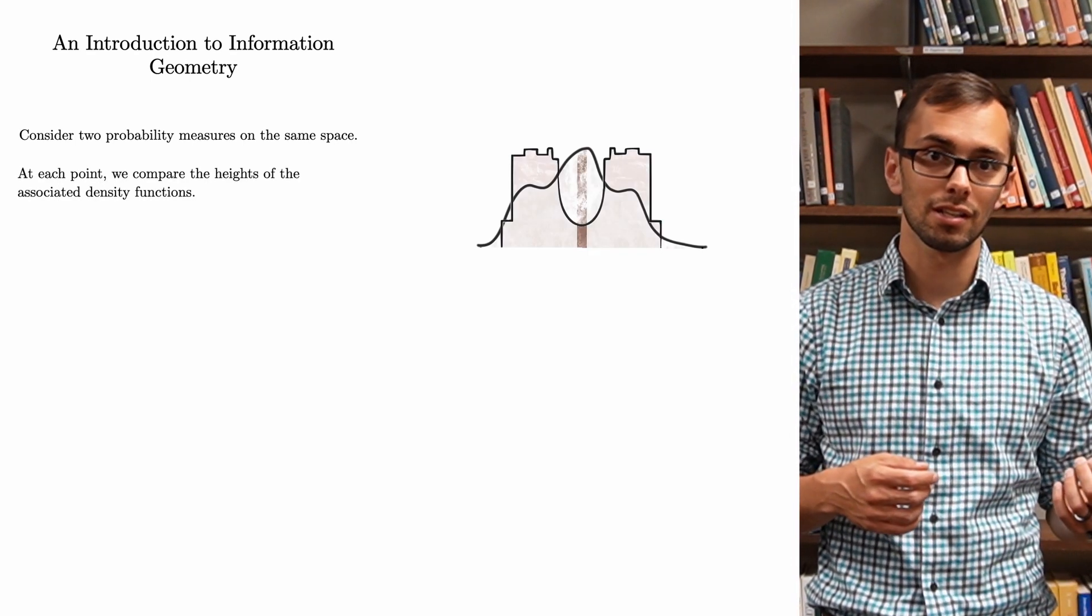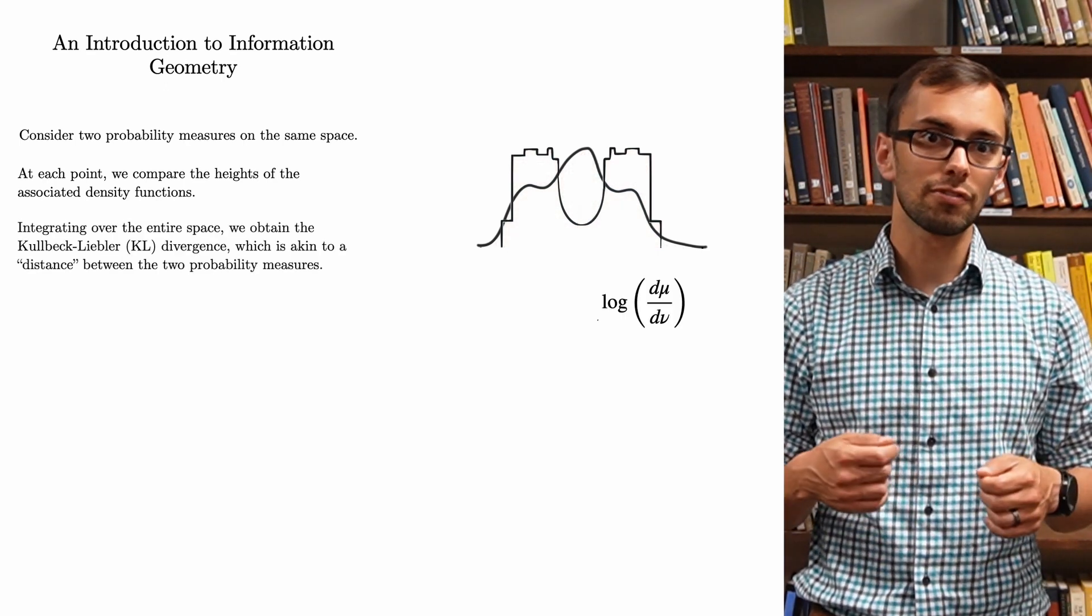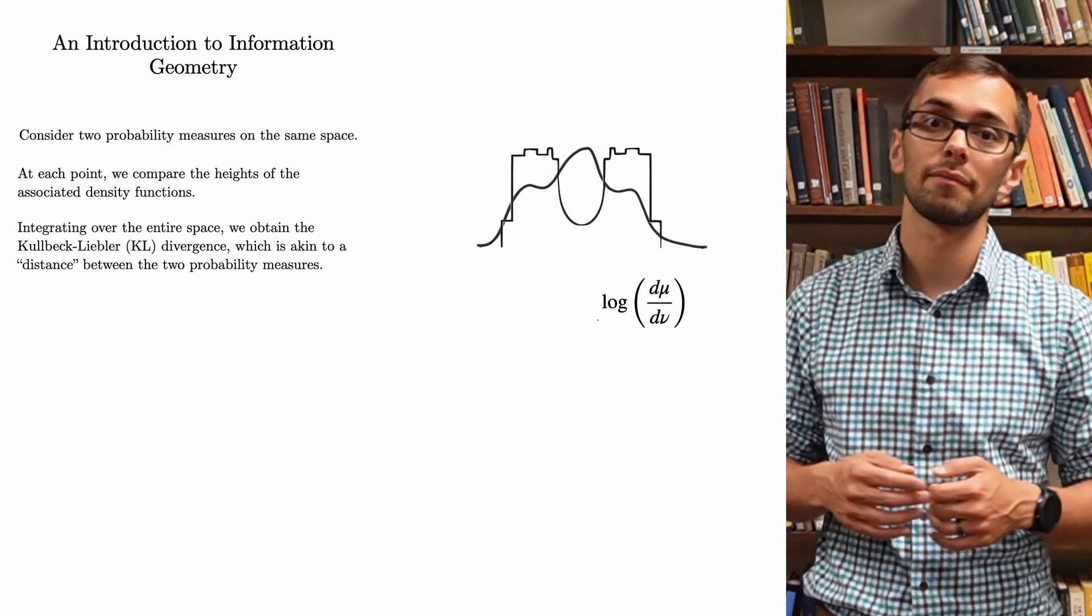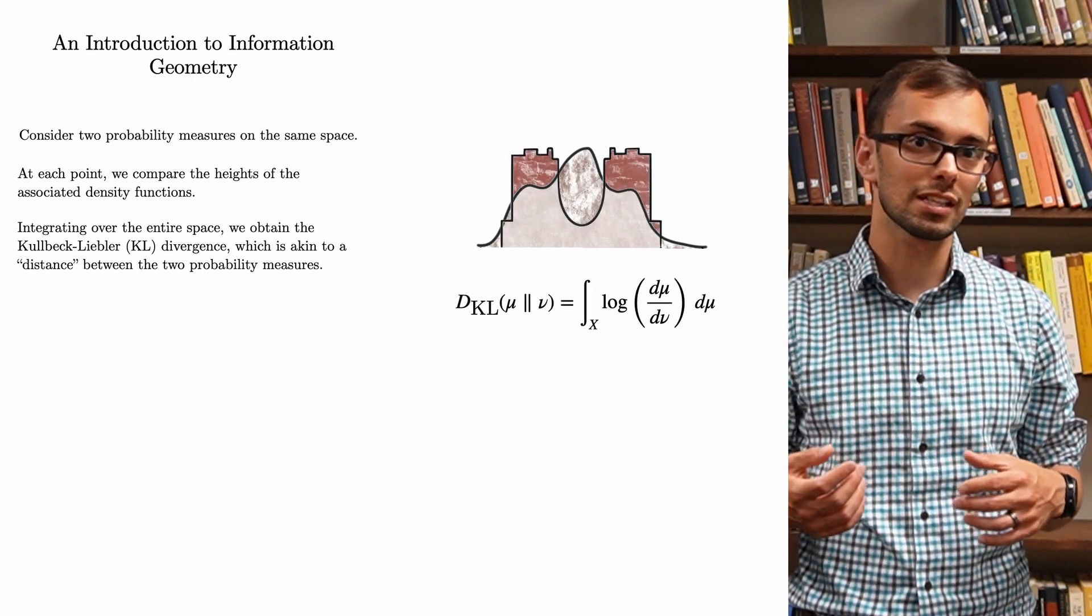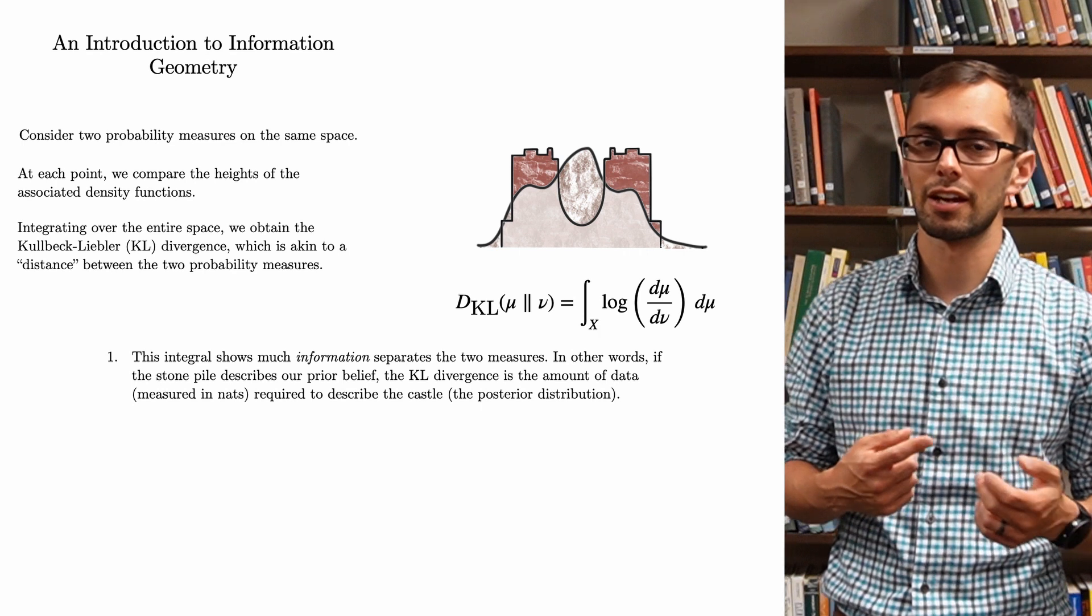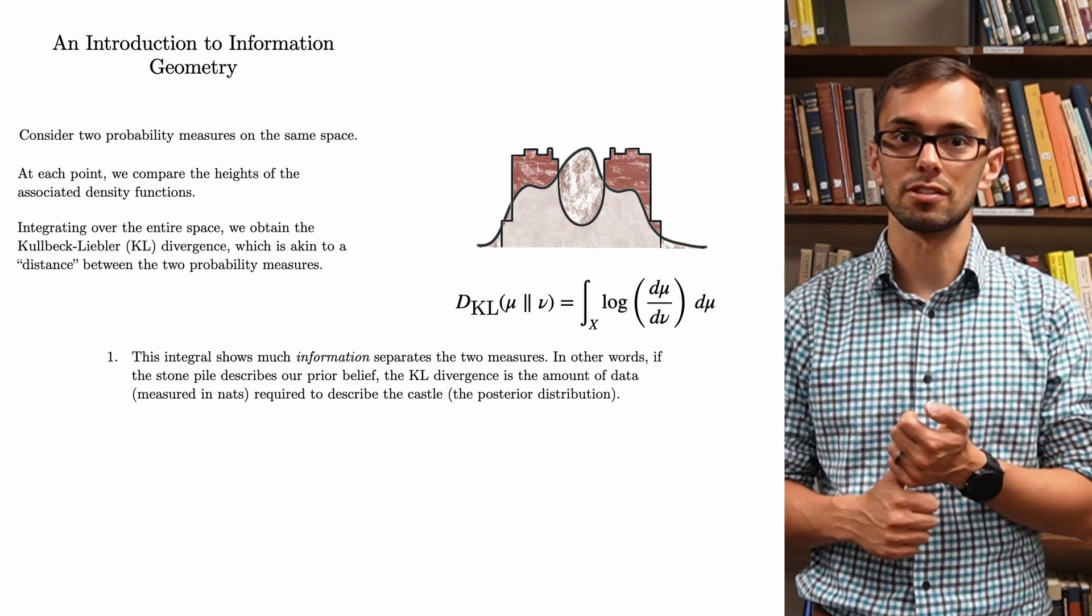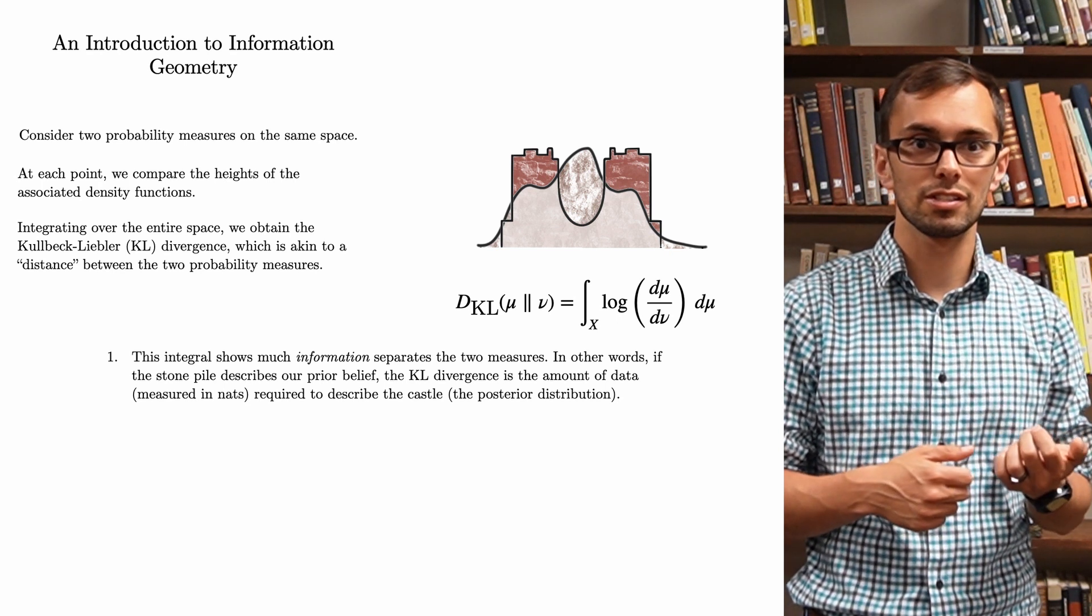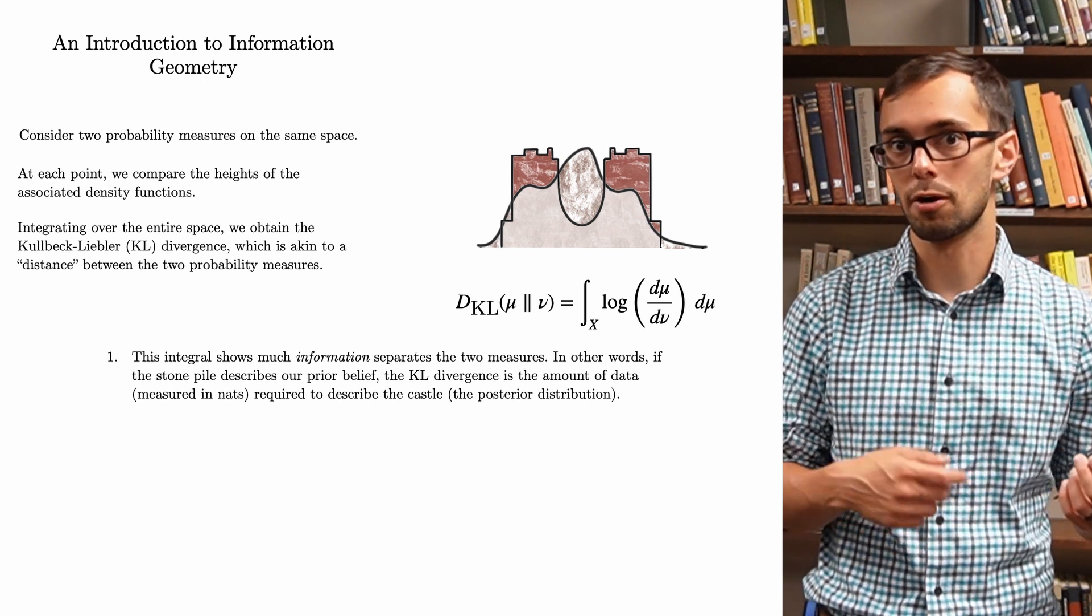At each point in the space, we consider the heights of the associated density function, and then we use the following function to compare the heights and integrate over the entire space. Doing so, we obtain the Kullback-Leibler, or KL divergence, which is akin to a distance between the two probability measures. There are two things that I should note. This integral describes the amount of information between these two measures. In other words, if the stone pile describes our prior belief, the KL divergence is the amount of data, measured in nats, required to describe the castle, which would be our posterior distribution.